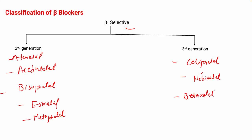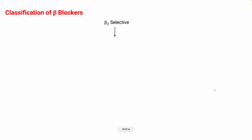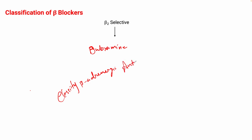The last classification is the beta-2 selective antagonist, and there is only one drug: butoxamine. This is the full classification, and always remember that in university exams the classification is a must — questions like 'classify beta adrenergic antagonists' are very important.